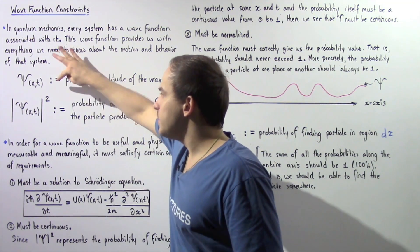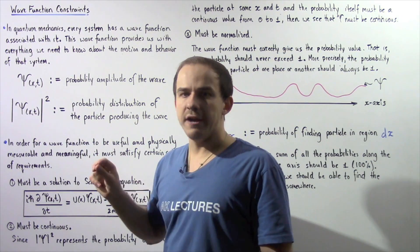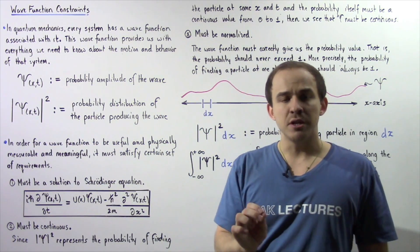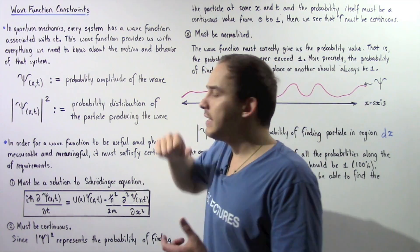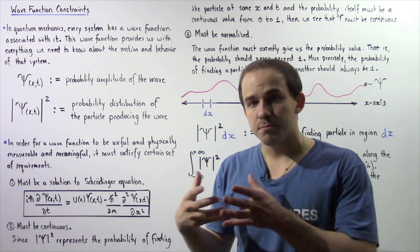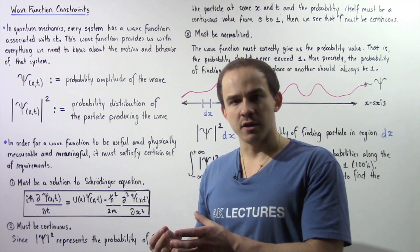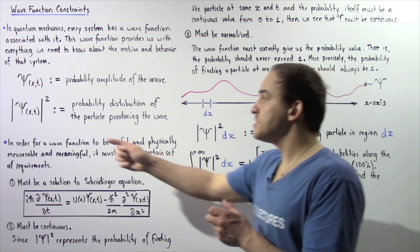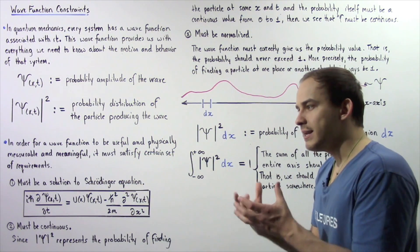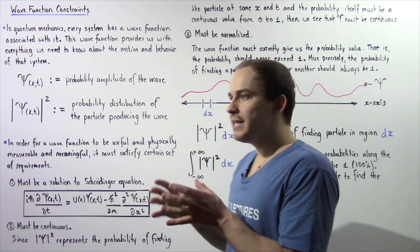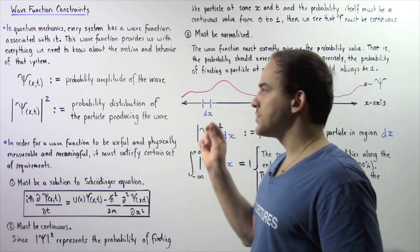Now what if we take the square of the absolute value of our wave function? This gives us information about the particle of that system — it gives us the probability distribution, the probability density of the particle that produces that wave. This tells us the probability, how likely it is that we are to find that particle at a certain position x at a certain time t.